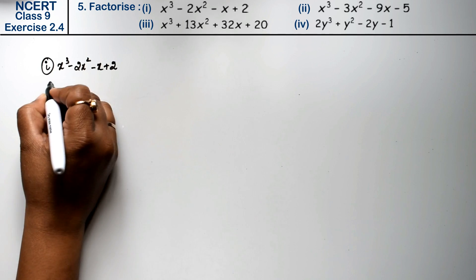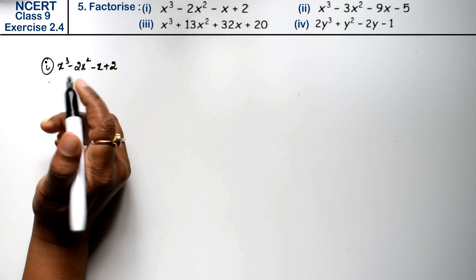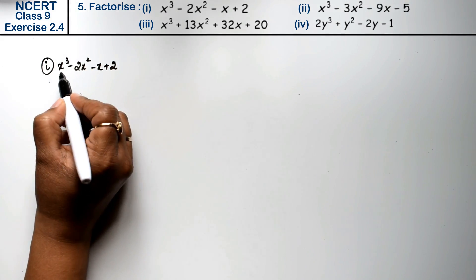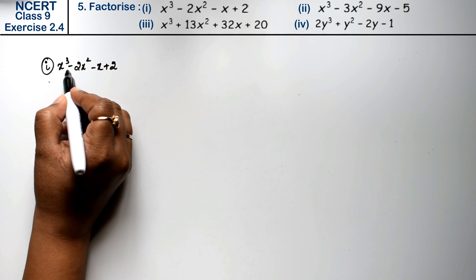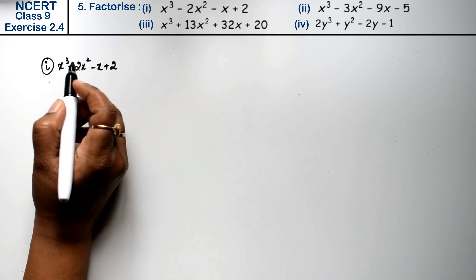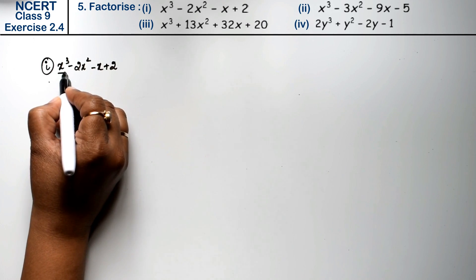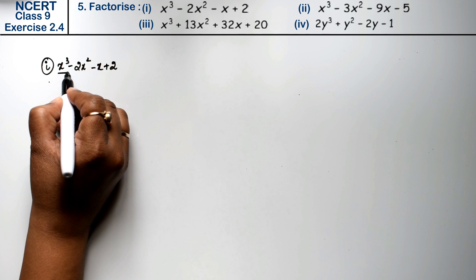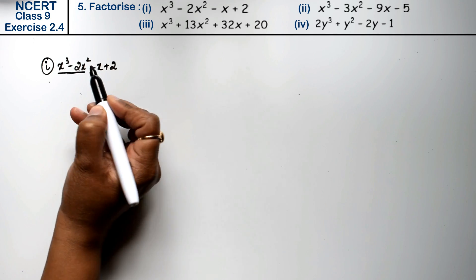In the last question there were three values, but now there are four values. In the case of four values, you cannot use the same approach as with three values. Instead, you have to look for what is common between the first two terms and what is common between the last two terms.